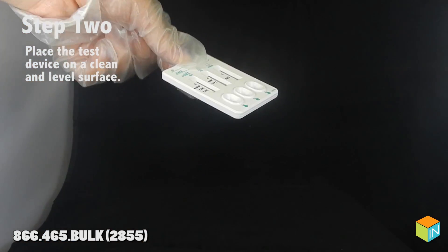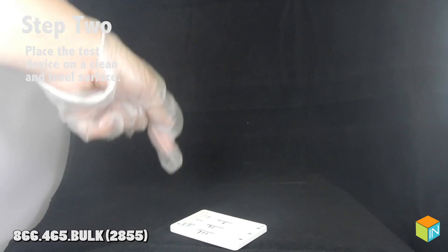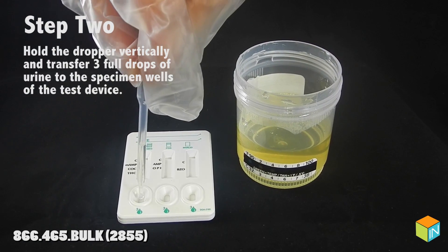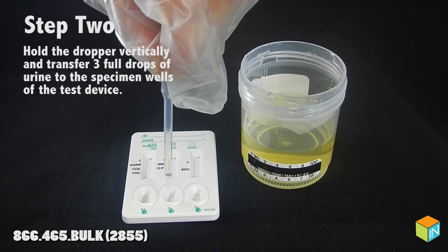Step 2: Place the test device on a clean and level surface. Hold the dropper vertically and transfer 3 full drops of urine to the specimen wells of the test device.